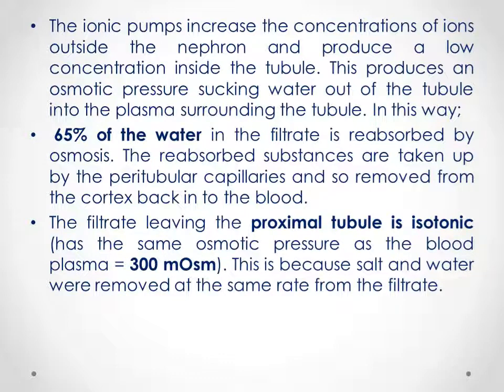The ionic pump increases the concentration of ions outside the nephron and produces a low concentration inside the tubule. That is why osmotic pressure will draw water out of the tubule into the plasma surrounding the tubule, as seen in the peritubular capillaries. About 65% of the water in the filtrate is reabsorbed by the proximal tubule by osmosis. These reabsorbed substances are taken up by peritubular capillaries and removed from the cortex back to the blood. The proximal tubule is isotonic, because it has the same osmotic pressure as the blood.